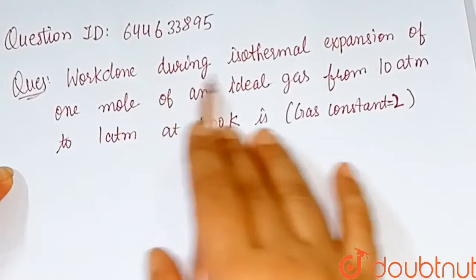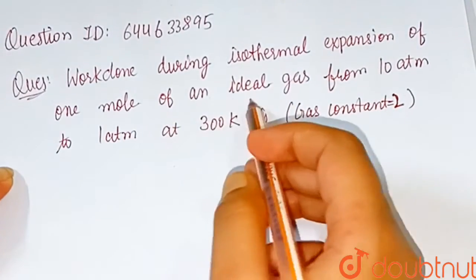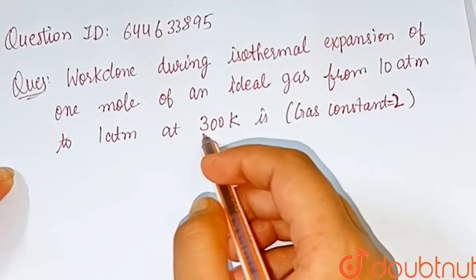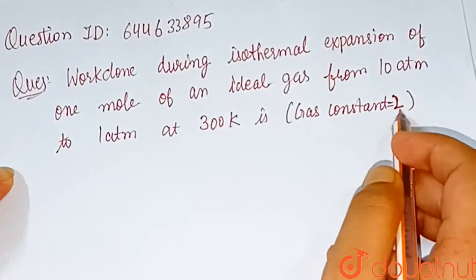Our question is: work done during isothermal expansion of 1 mole of an ideal gas from 10 atm to 1 atm at 300 Kelvin. The gas constant is equal to 2.